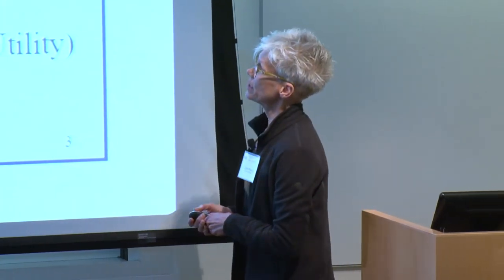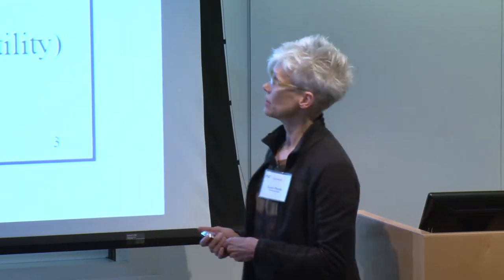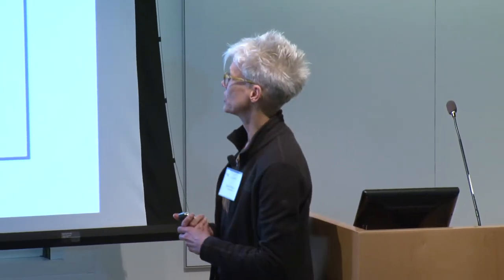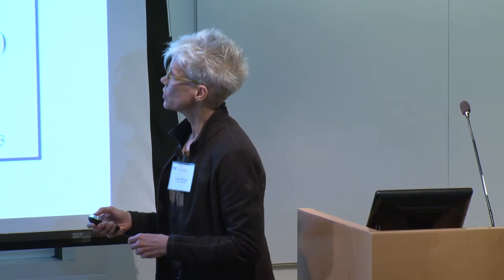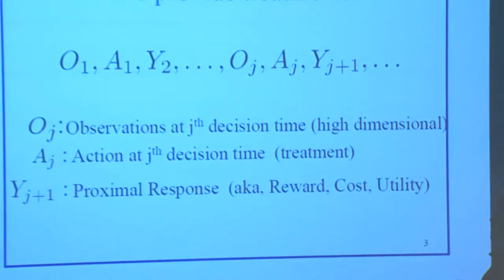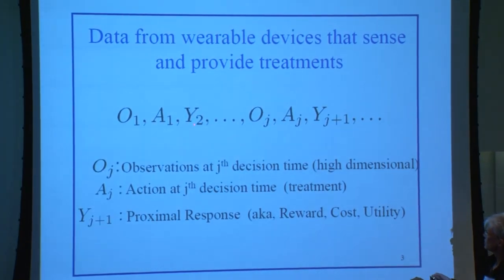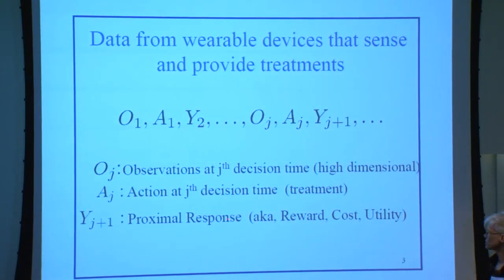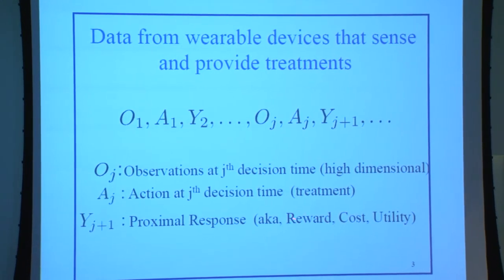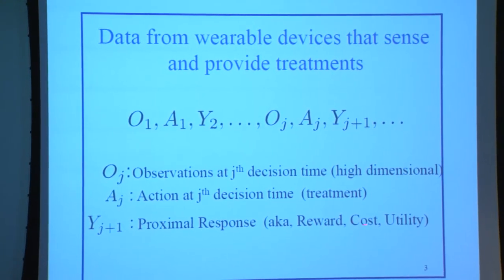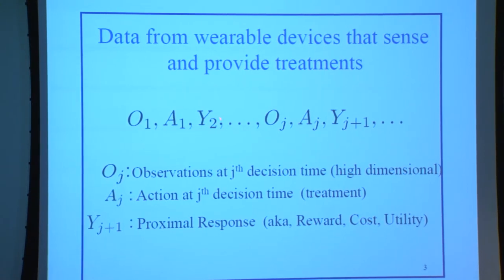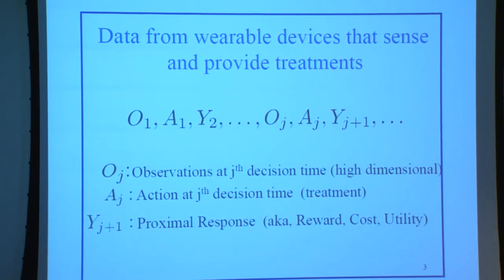What kind of data do we get from wearable devices that can both collect information and provide treatments? Each individual contributes a sequence — a time series of observation, action, response. I call it a proximal response; in CS it's called a reward, or in operations research, a cost or utility. So it's a time-varying outcome: observation, action, response, and so on. The actions are treatments, and the observations tend to be pretty high-dimensional.